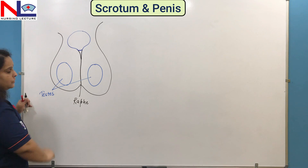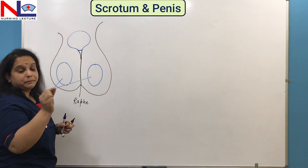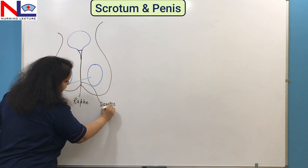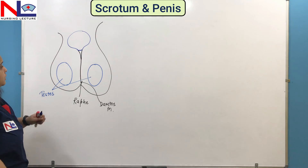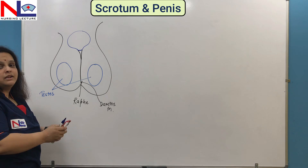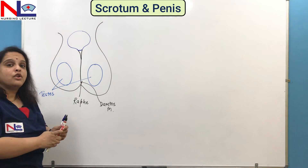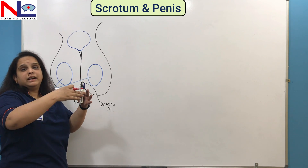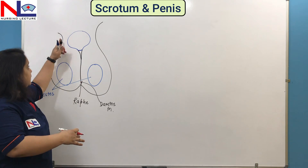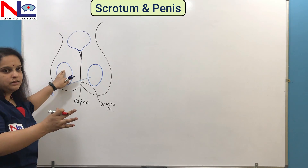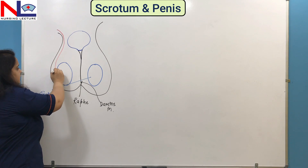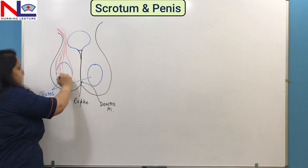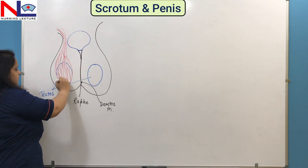These are the testes. The scrotal septum is made up of the subcutaneous layer as well as one muscle called the dartos muscle. The testes are surrounded by a type of muscle which is the extension of the internal oblique muscle. The internal oblique muscle is a muscle of the anterior abdominal wall. It is the extension of the internal oblique muscle that descends down through the spermatic cord and surrounds the testes.